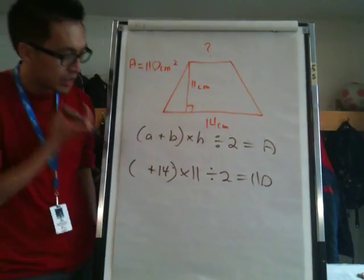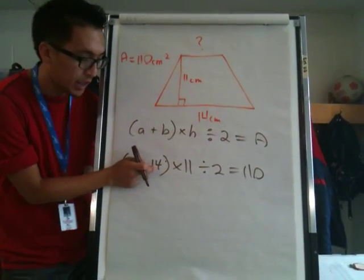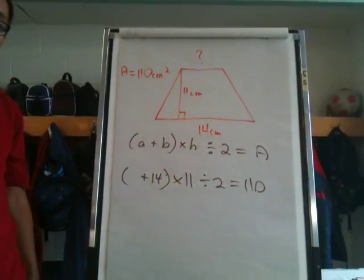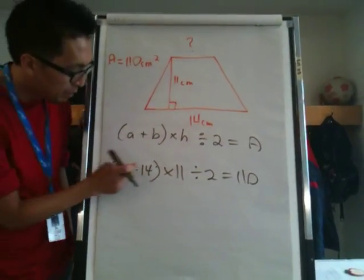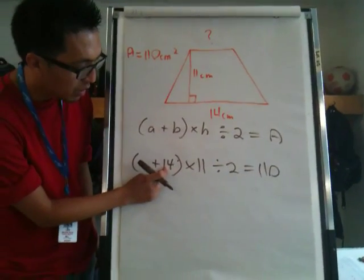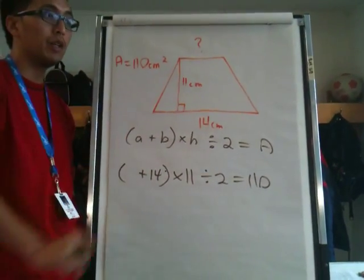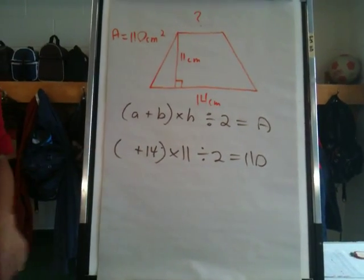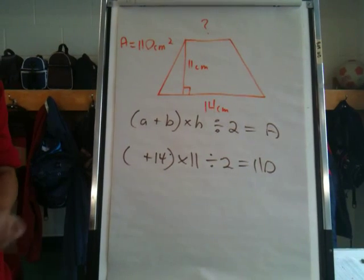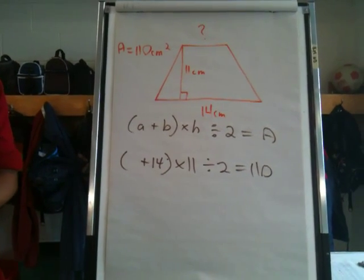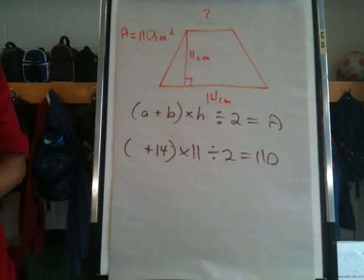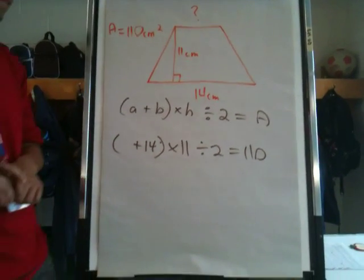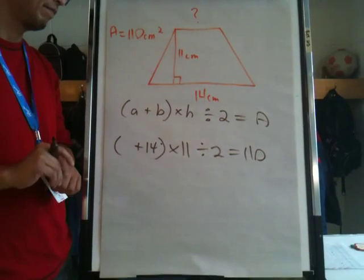So now we have to ask ourselves, what do you add to 14 to make this whole thing work? Maybe you might do it through trial and error again, like some people have done. 10 plus 14 is 24. Somebody help me out with the calculator again? Try that, 10 plus 14. You can often do that just by estimating. 24 times 11.